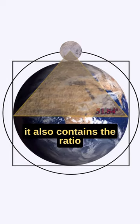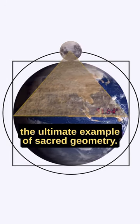Not only that, it also contains the ratio of Moon and Earth in it, making it the ultimate example of sacred geometry.